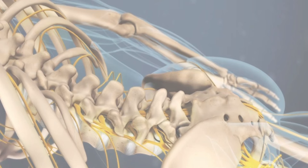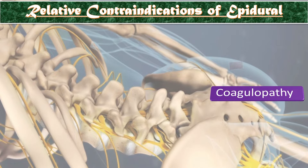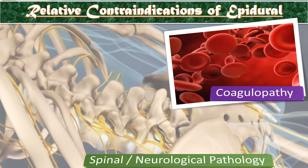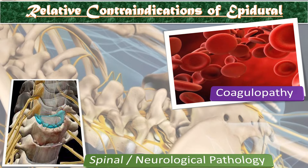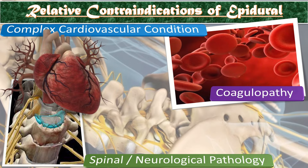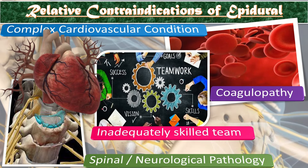The relative contraindications of epidural include: coagulopathy or when the patient is on anticoagulant therapy; spinal or neurological pathology or abnormality; complex cardiovascular conditions such as Eisenmenger syndrome and Marfan syndrome; and an inadequately skilled team.